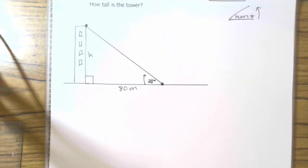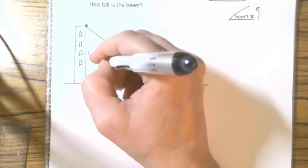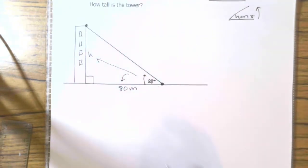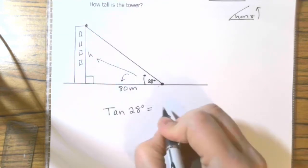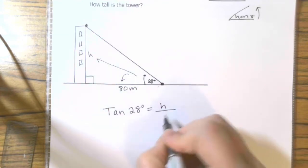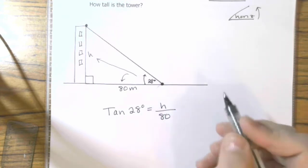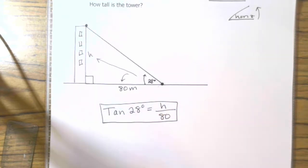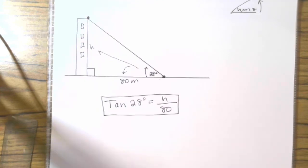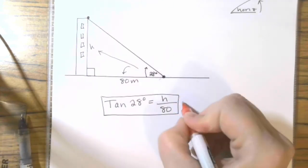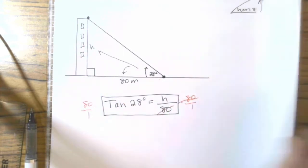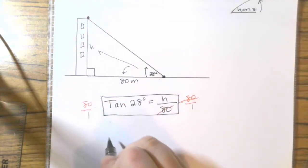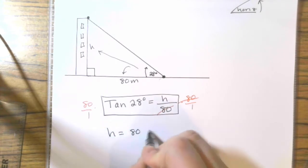Alright. So, the trig function that's going to get this done. I have opposite. I have adjacent. It's going to be tangent again. So, tangent of 28 degrees equals the opposite, which is H, over the adjacent, which is 80. That's your beginning equation. Now, again, 28 is not one of our memorized angles. So, we need to solve for H. We do this by multiplying by 80 over 1. The 80s cancel out. And, so, I have H equals 80 tangent of 28 degrees.